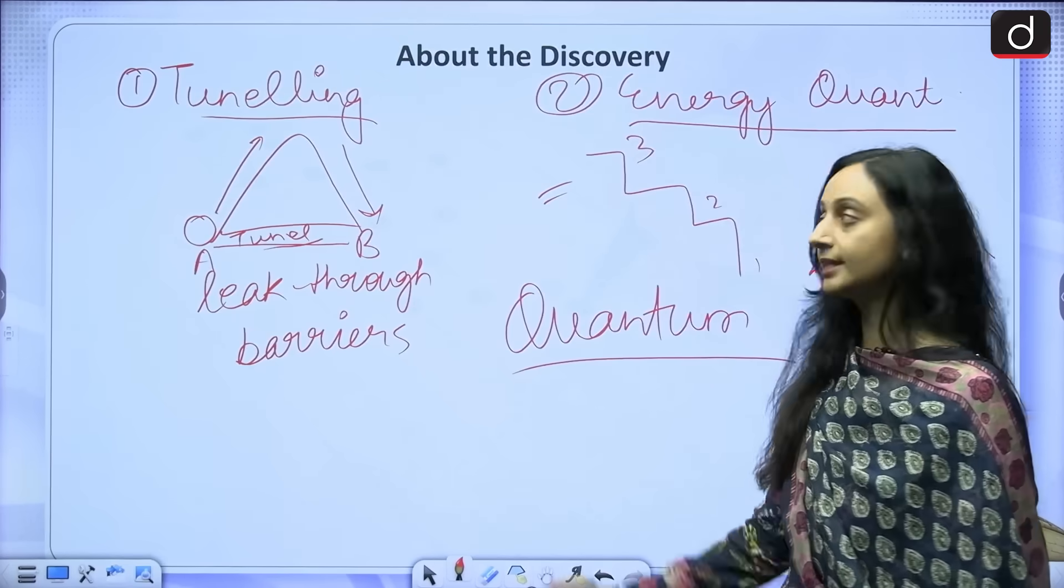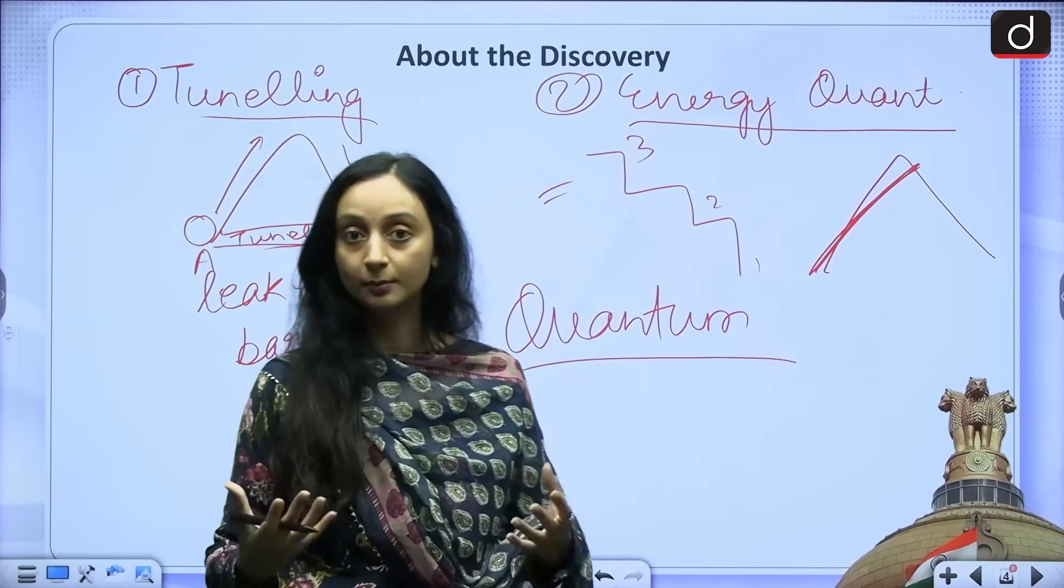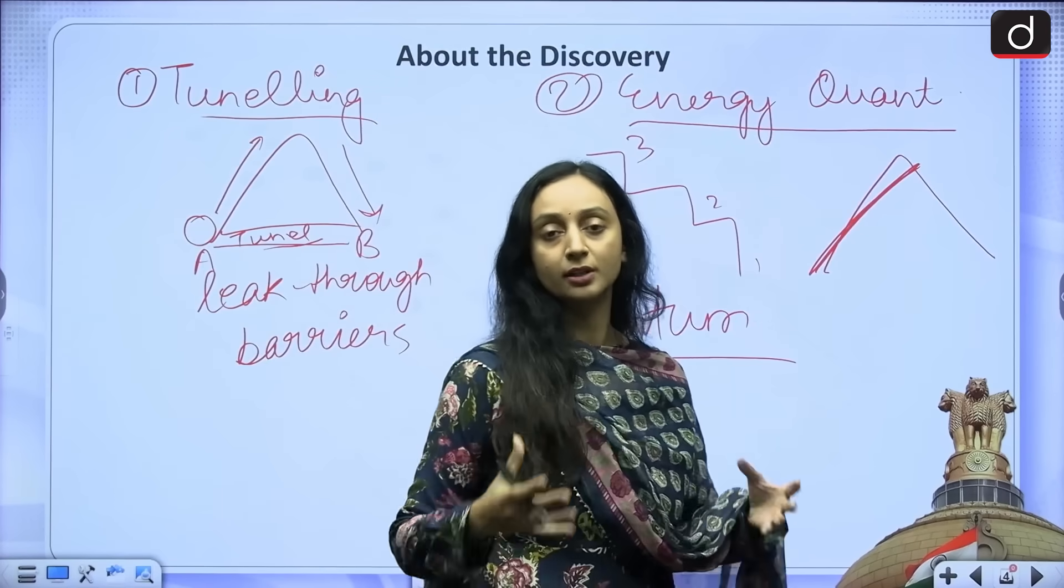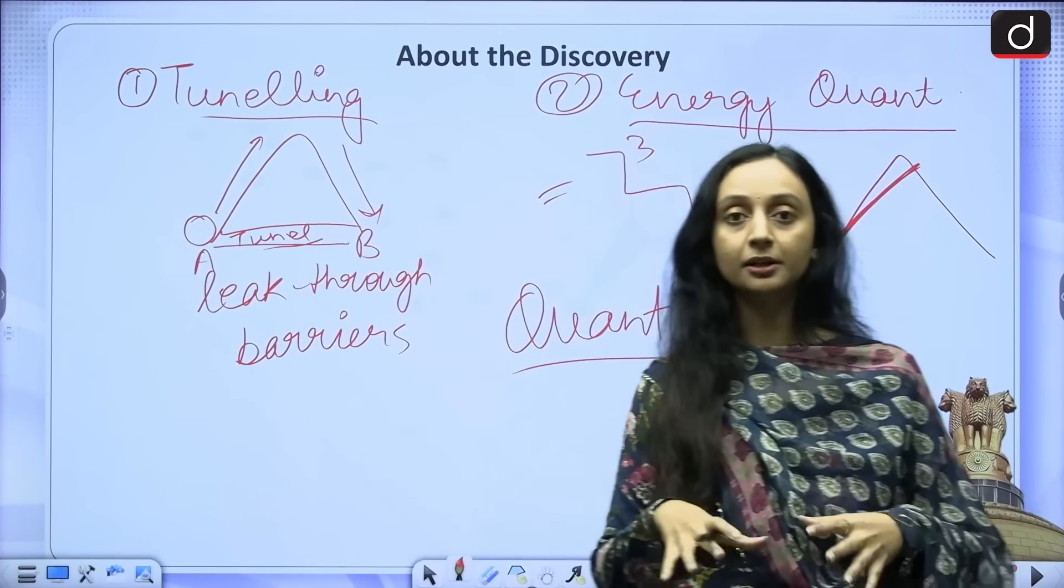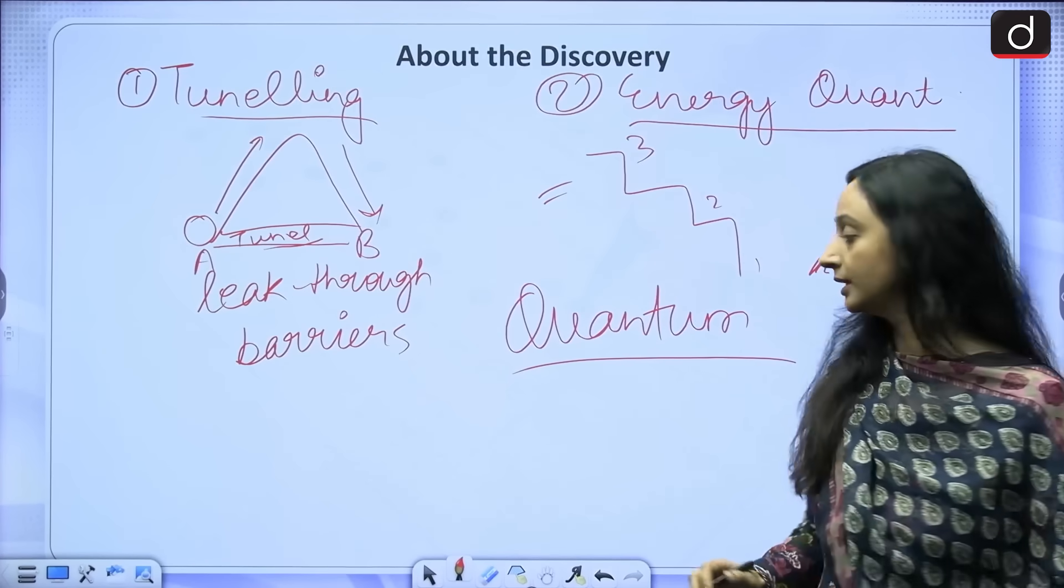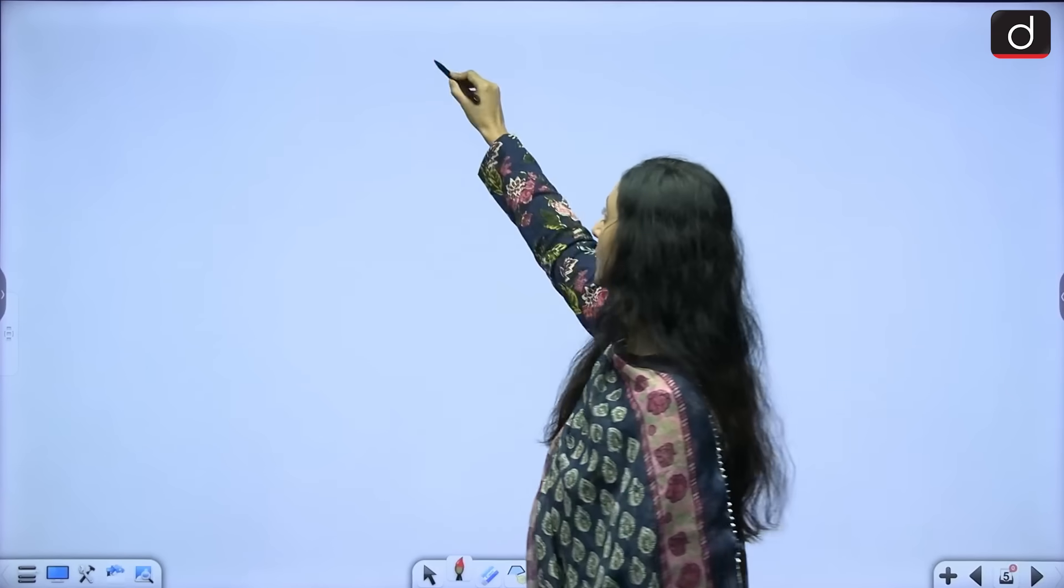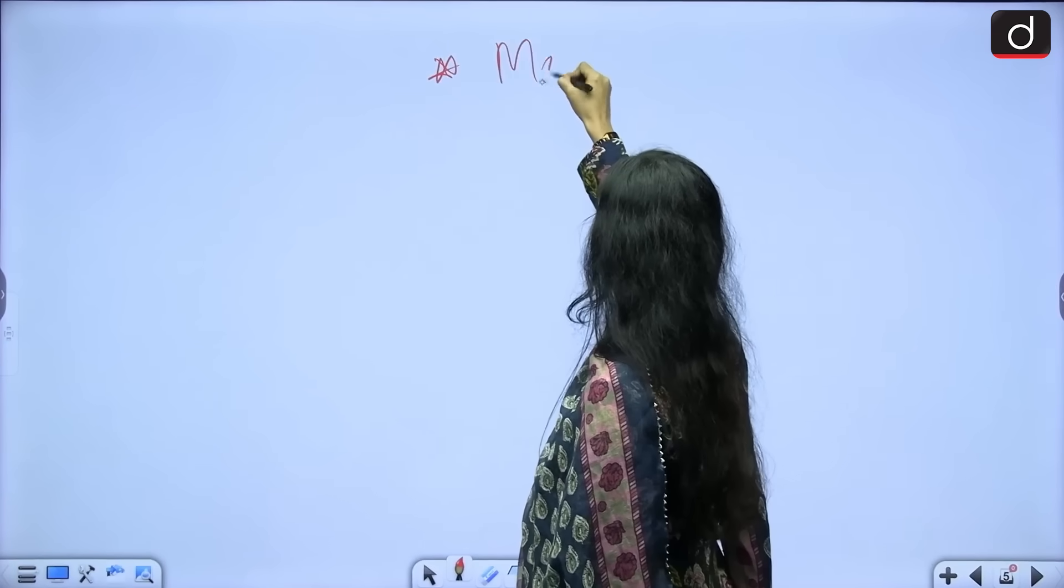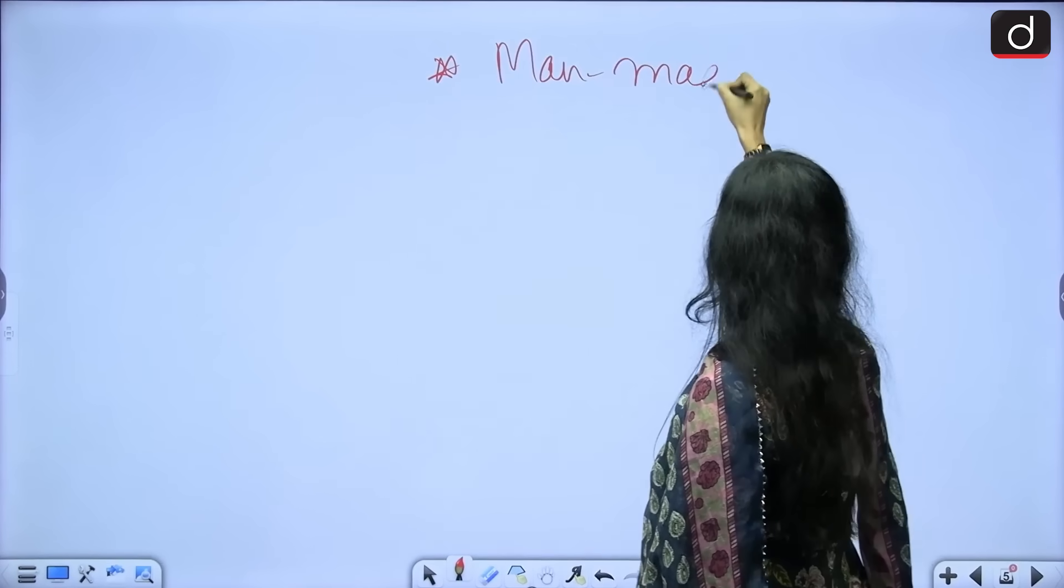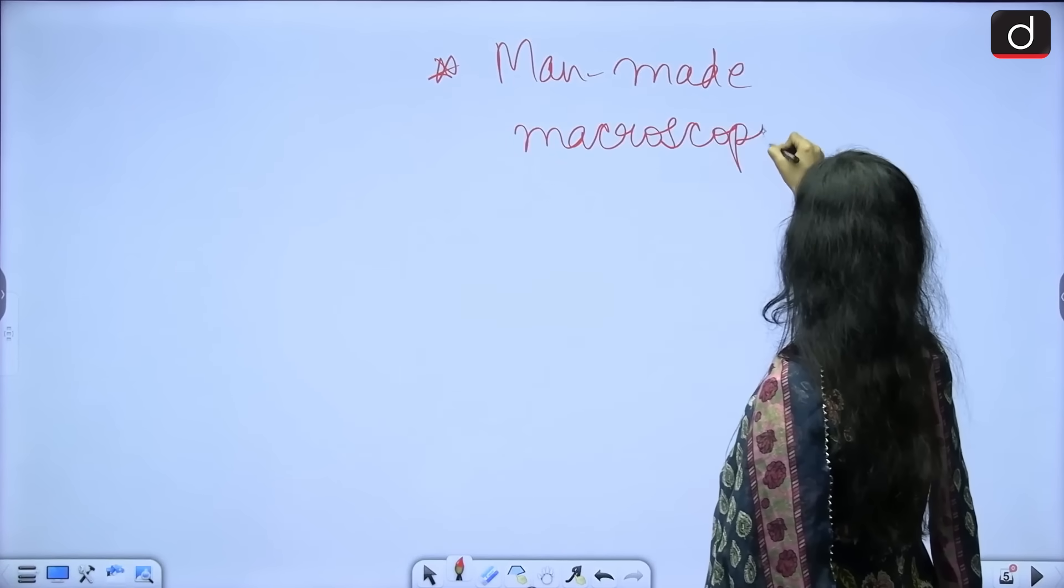Quantum mechanics and tunneling are both observed in quantum mechanics. And quantum mechanics happens at a quantum level, at a level of electrons, at a level of atoms and molecules. So it happens at an atomic level. Now what did these scientists discover? These scientists discovered that these phenomena, the phenomena of tunneling and the phenomena of energy quantization were also observed in a man-made macroscopic electric circuit.